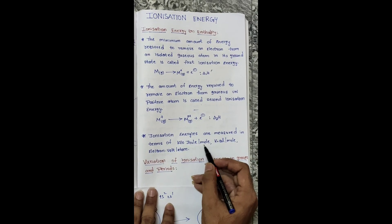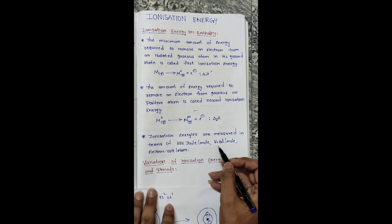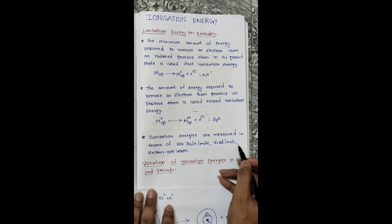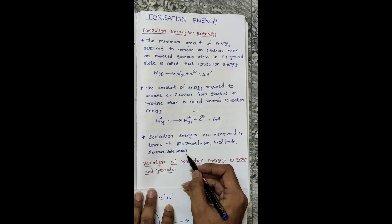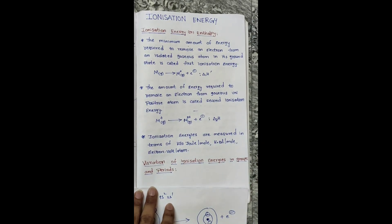Ionization energies are measured in terms of kilojoule per mole, kilocalorie per mole, or electron volt per atom.